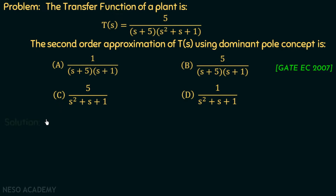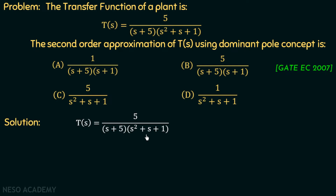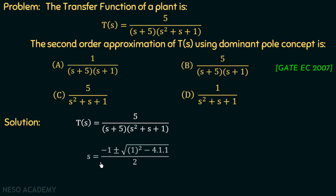Moving on to the solution: we have the transfer function T(s) equal to 5 over (s + 5) multiplied with (s² + s + 1). This is a third-order system having three poles. One pole is clearly visible at s = -5, and to find the other two poles we need to find the roots of the quadratic equation using the quadratic formula.